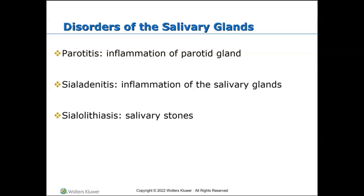Parotitis is inflammation of the parotid gland and is the most common inflammation of the major salivary glands. Parotitis can present as a local process or a manifestation of systemic illness. Sialadenitis is inflammation of the salivary gland, and sialadenitis of the submandibular gland is less common than that of the parotid gland. Acute sialadenitis is usually due to a bacterial or viral infection, presenting with rapid onset of pain and swelling. Symptoms usually begin to subside within about 48 hours of treatment with antibiotics. Sialolithiasis, or salivary stones, are hardened mineral deposits that form in the salivary glands.